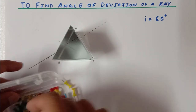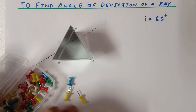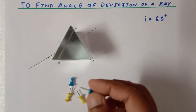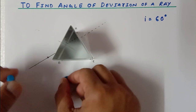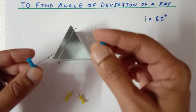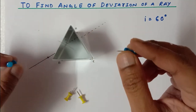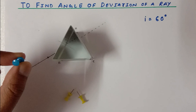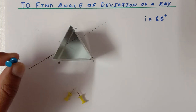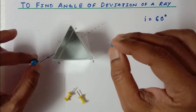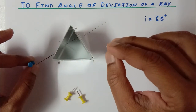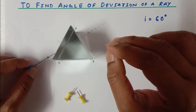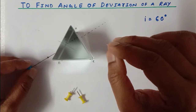I am going to use 4 softboard pins. These two softboard pins must be placed at a distance of more than 5 centimeters apart — so the minimum distance between them is 5 centimeters. On the line, I am going to place them upright.